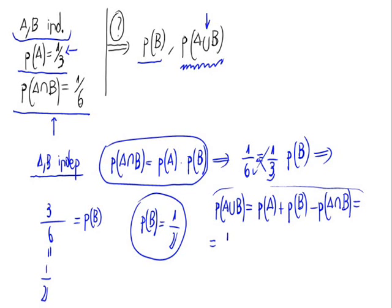Now, we have the probability of A, one third, plus the probability of B, that is one half, minus the probability of A intersection with B that was given at the beginning, one sixth.